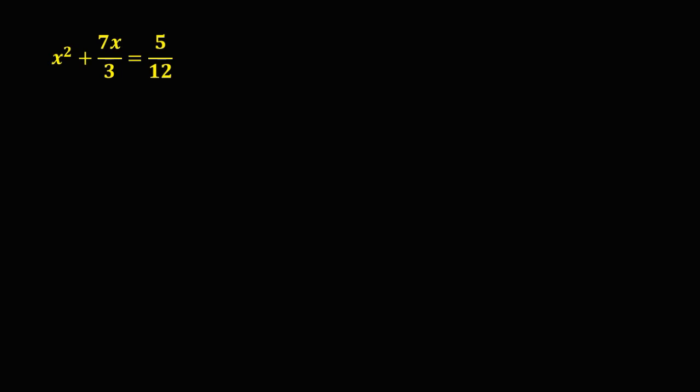Let's solve rational equations. If we have more than two rational expressions, we cannot use cross multiplication. To find the solution, we use the LCD — the number divisible by all given denominators. On this equation, the denominators are 1, 3, and 12, so the LCD is 12.